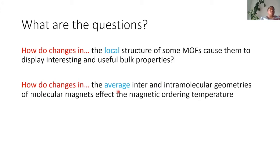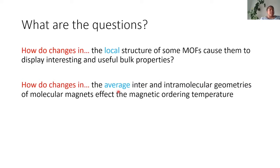Most investigations into functional material properties stem from a desire to improve on the current generation of materials. For example, if we have materials with a coupling between an electronic and a magnetic moment, we want to understand the underpinning mechanisms, which can lead to opportunities to increase the strength of coupling and increase the temperature at which cooperative behavior is seen. To do this, we need to understand how materials behave in response to changes in thermodynamic variables like temperature and pressure, and what's happening on the atomic scale.